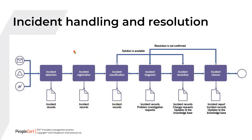This is the process flow for the incident handling and resolution process. It includes the following activities: incident detection, incident registration, incident classification, incident diagnosis, incident resolution, and incident closure. Each activity performs some updates to the incident record. Throughout the process, ownership over each incident should be ensured. Ownership may be transferred during the process, but each incident should have a person responsible for it at any given point in time.